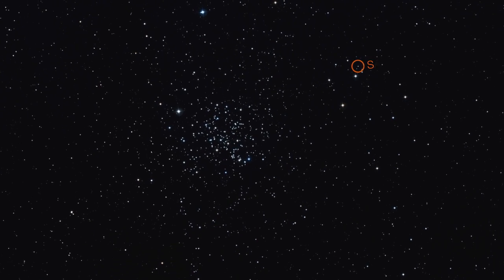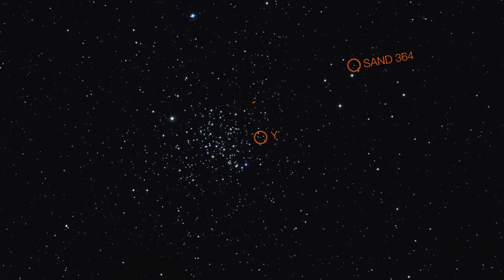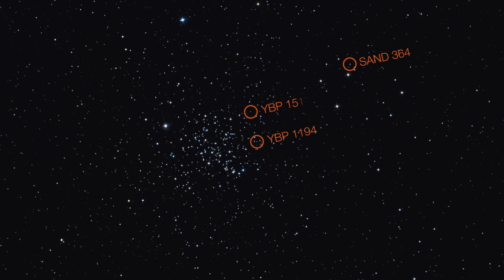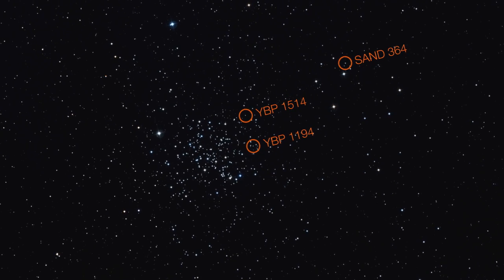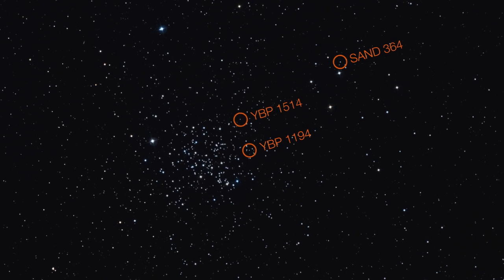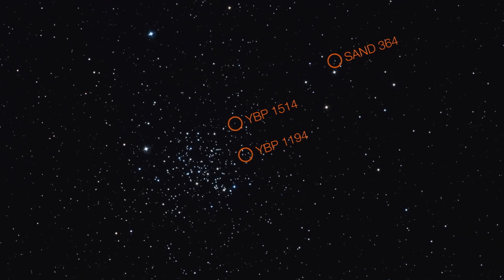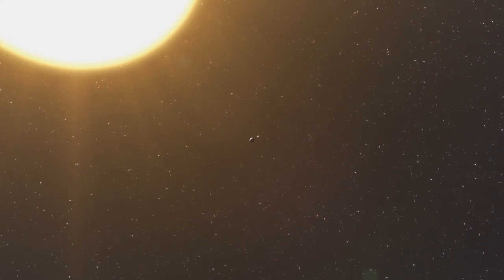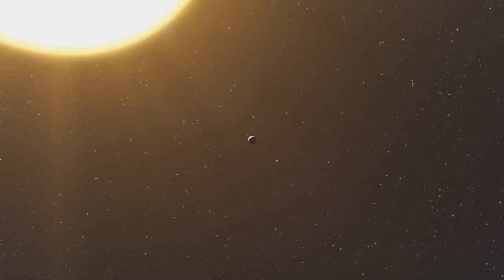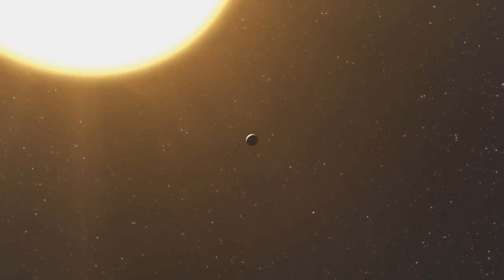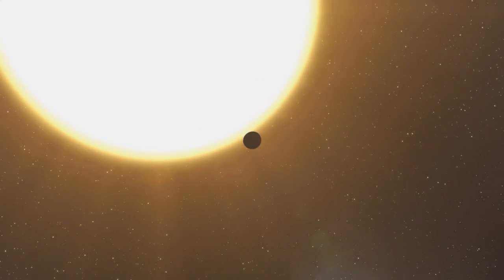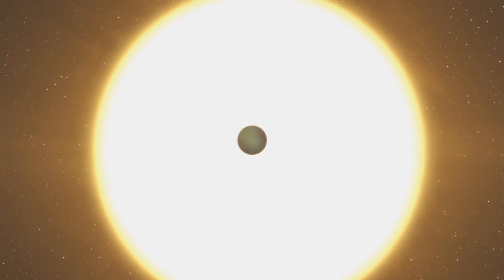Three planets were discovered in the cluster. Two of these planets orbit stars similar to the Sun, and one orbits a more massive and evolved red giant star. The first two planets both have about one-third the mass of Jupiter and orbit their host stars in seven and five days respectively.